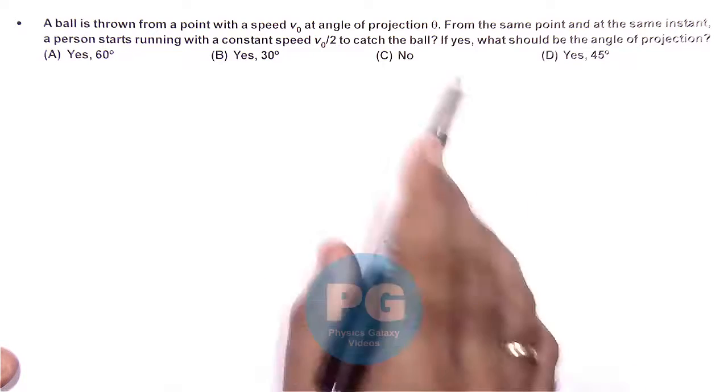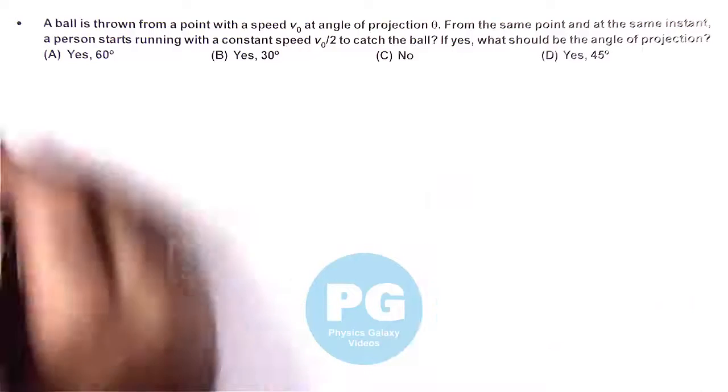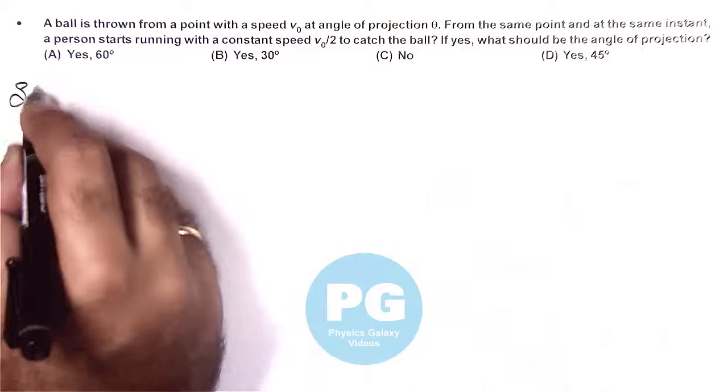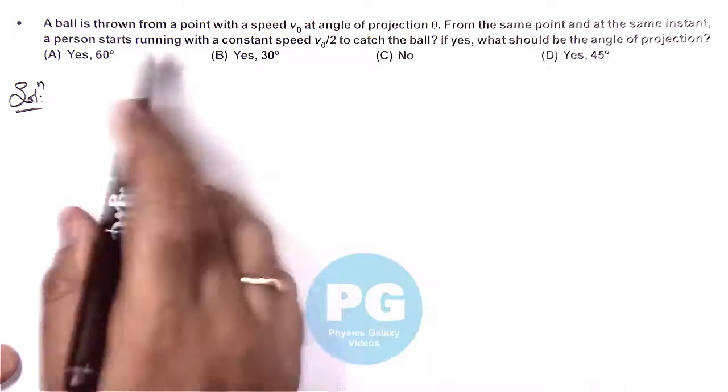It is asking if yes, that means if he is able to catch the ball, what should be the angle of projection? So first we need to check whether it is possible or not. If yes, then what will be the angle at which the ball is thrown?